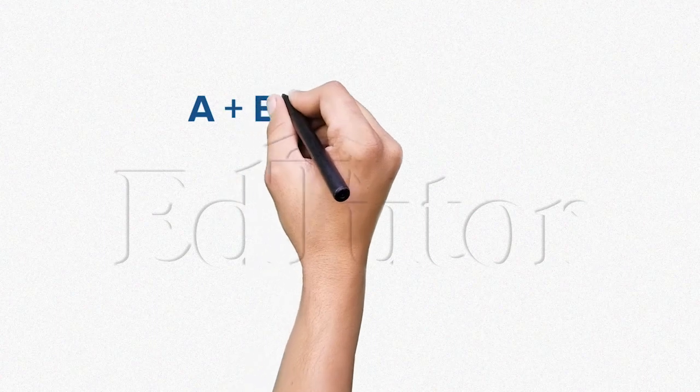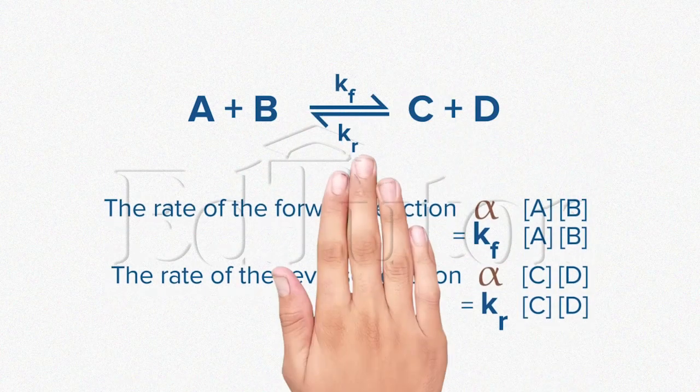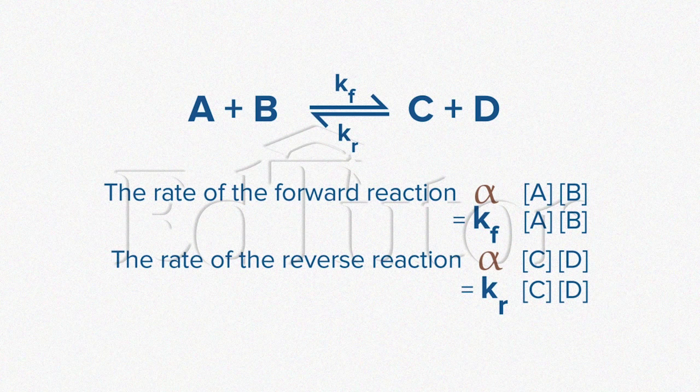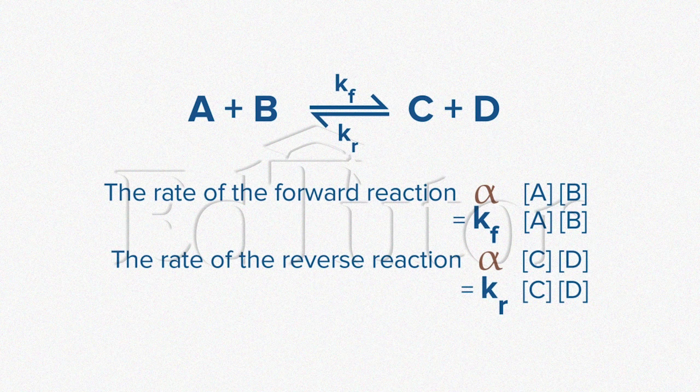In this case, KF and Kr are the proportionality constants. This is referred to as the specific rate constant of the forward and the reverse reaction. Got it? Great!